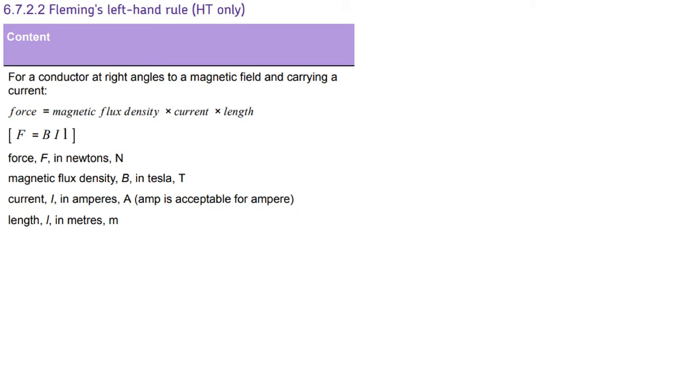On to the next part for students sitting in the higher tier paper. And that is the BIL equation. Force equals magnetic flux density times current times length. Now I'd be surprised if you were unsure about the unit for force, which is, of course, newtons. And current is amperes.